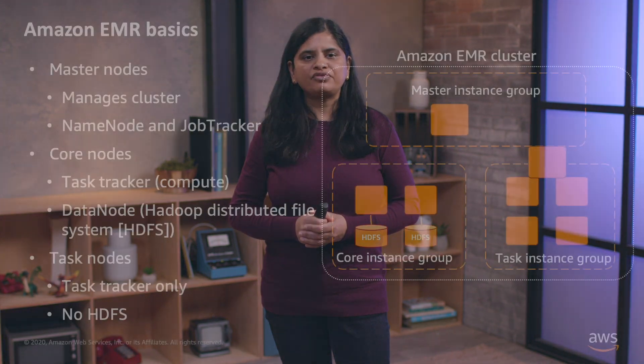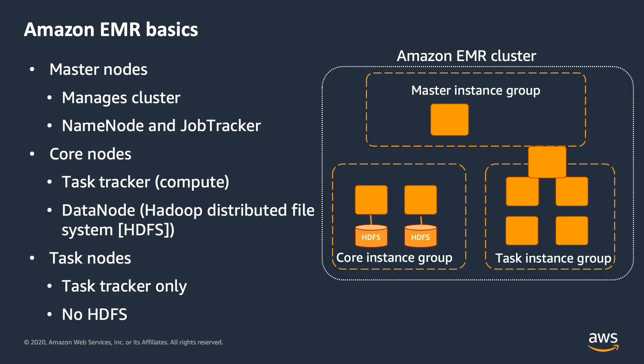If you look into compute optimization, we need to dive a little bit deeper into the components that make up an Amazon EMR cluster. There are three types of nodes: a master node that manages the cluster and runs the name node and job tracker daemons; core nodes, which run the task tracker and data node daemon and also have HDFS installed; and task nodes, which run only the task tracker daemon with no HDFS.